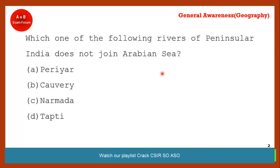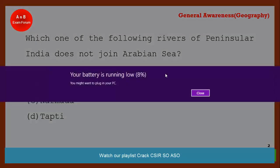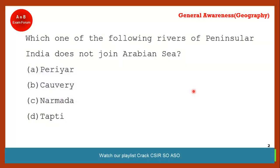The next question: which of the following rivers of Peninsular India does not join the Arabian Sea? Kaveri is the correct answer. Kaveri flows from west to east and falls into the Bay of Bengal. Tapti, Narmada, and Periyar all flow from east to west and fall into the Arabian Sea. So the correct answer is option B — Kaveri.